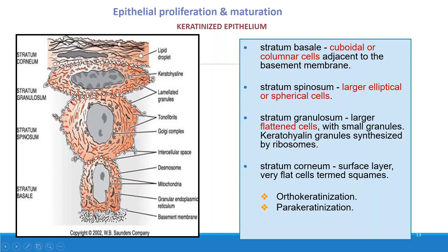The spinous layer cells are stellate and spherical in shape and synthesize proteins and give rise to new organelles. As cells migrate from stratum basale to stratum spinosum, they increase in size. In the stratum granulosum, formation of keratohyalin granules takes place. As cells proceed from stratum spinosum to granulosum, they decrease in size. The superficial layer is the stratum corneum, where the nucleus is absent in orthokeratinized epithelium and a pyknotic nucleus is present in parakeratinized epithelium.